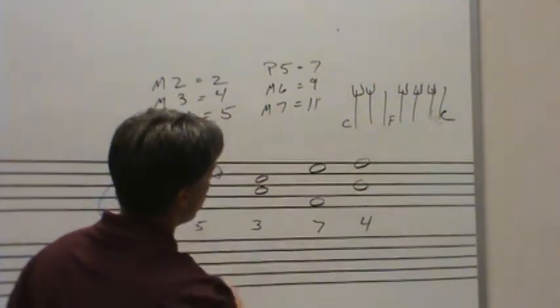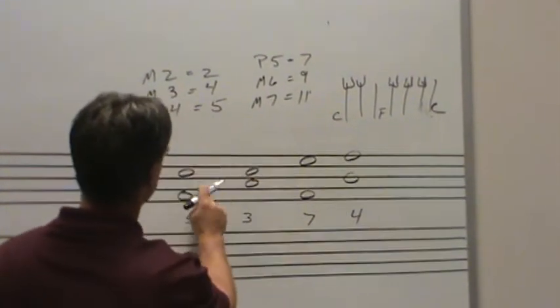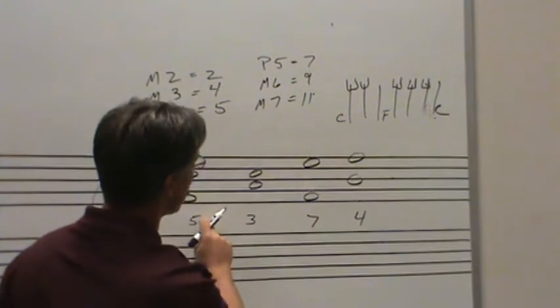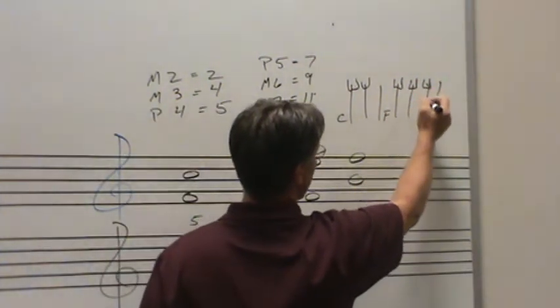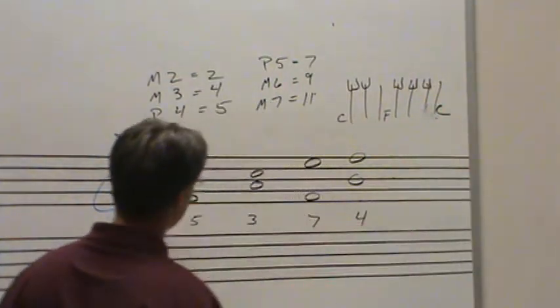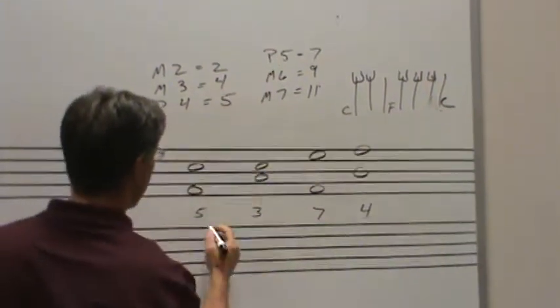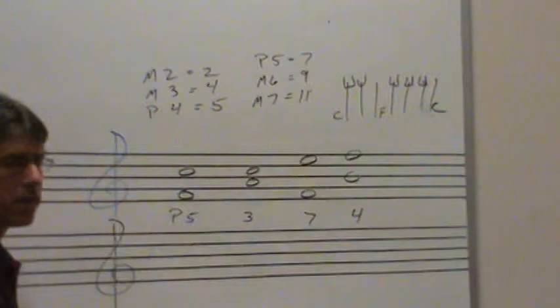And then we can work from there and say, okay, we've got from F to C. We know it's some kind of a fifth. One, two, three, four, five, six, seven half steps. A perfect fifth is seven half steps. We can identify it as a perfect fifth.